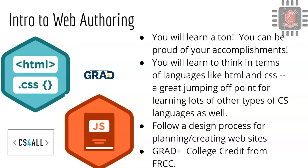A big part of Intro to Web Authoring is learning to think in terms of languages. Some of the languages you'll learn are HTML and CSS, which is a great jumping-off point for learning other computer science languages. You'll also follow a design process appropriate to engineering — in this class, for planning and creating websites. As a bonus, this is a Grad Plus class, so you can earn college credit from Front Range Community College.